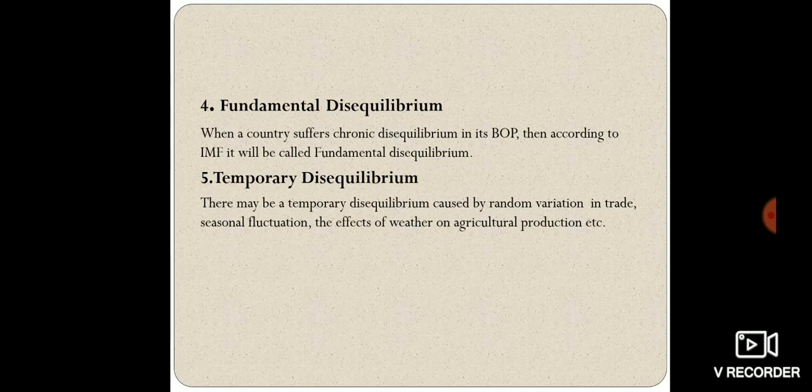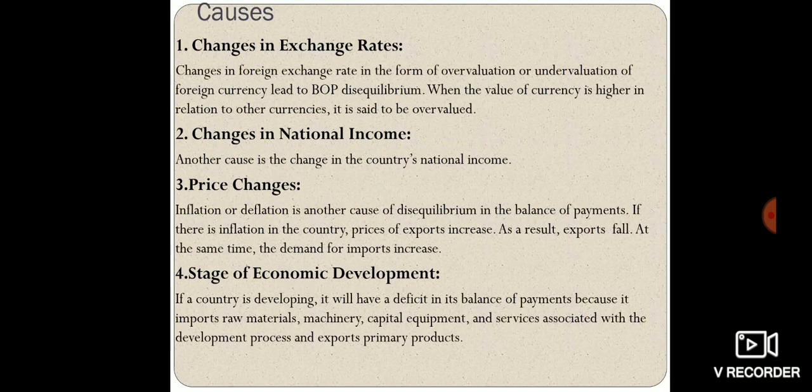Temporary disequilibrium may be caused by random variations in trade, seasonal fluctuations, effects of weather, or agricultural production. These factors affect the balance of payment and are called temporary disequilibrium. Now let's look at the causes of disequilibrium. The first cause is changes in the exchange rate.